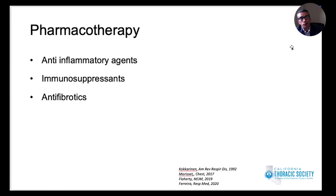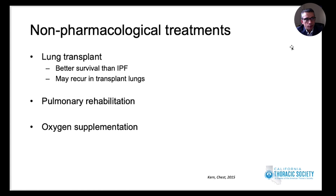Other treatment modalities include lung transplant, which should be considered for progressive symptoms and worsening lung function despite adequate medical therapy. Survival after lung transplant is better in chronic HP than in IPF. However, chronic HP can recur post-transplant if the patient continues the same exposure. Adjunctive treatments such as pulmonary rehabilitation and oxygen supplementation should also be considered, though evidence is less robust than in COPD.